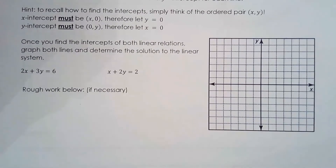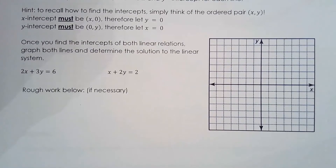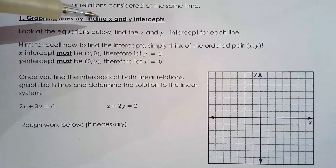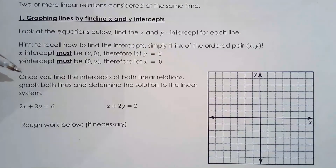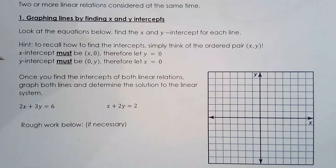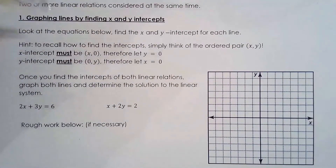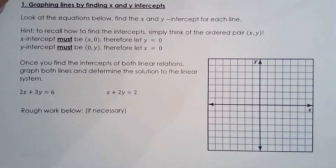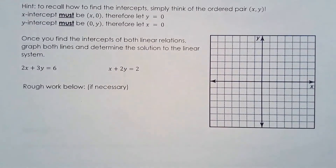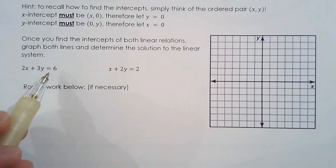From last year there were several ways you learned to graph a line. One of those ways was graphing lines by finding the x and y intercepts. When graphing a line you only need two points — it doesn't matter which two points, you just connect the dots. Two special points on a line are the x and y intercepts. The x intercept is where the line crosses the x-axis and the y intercept is where it crosses the y-axis. To solve for the x intercept, let y equal zero; to solve for the y intercept, let x equal zero.